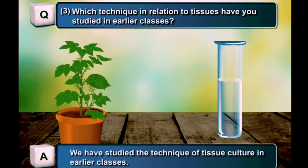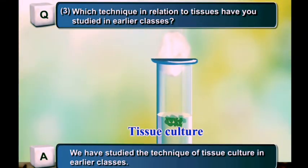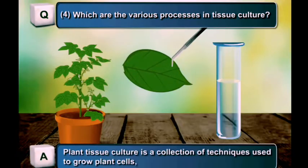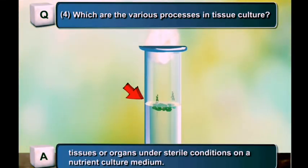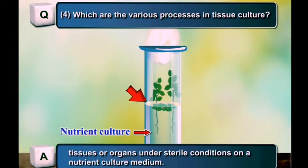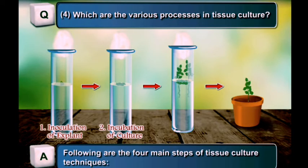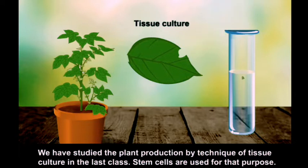Which technique related to tissue have you studied in earlier class? We have studied the technique of tissue culture, related to plants. Plant tissue culture is a collection of techniques used to grow plant cells, tissue or organs under sterile conditions on a nutrient culture medium. The four main steps of tissue culture are: inoculation of explant, incubation of culture, subculturing, and transplantation of the regenerated plant.